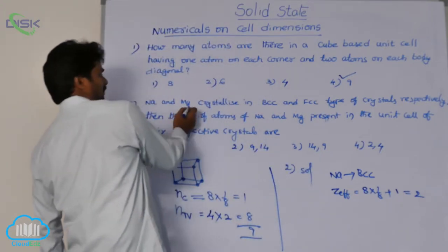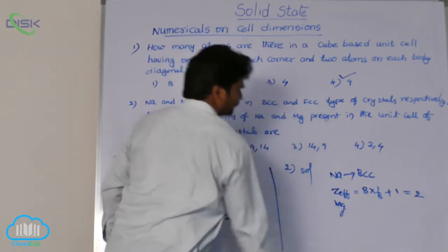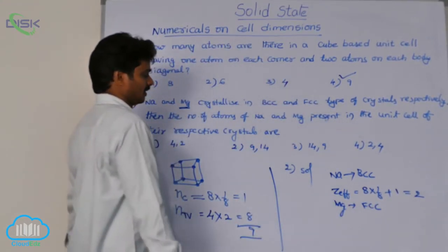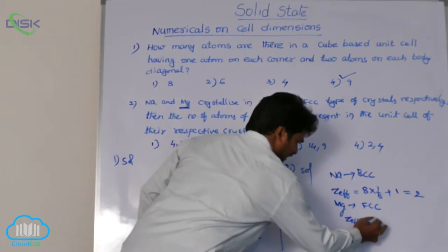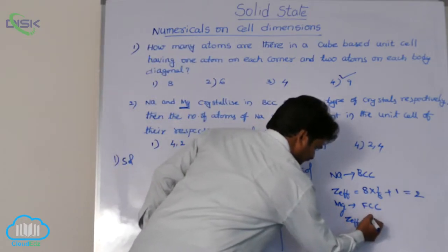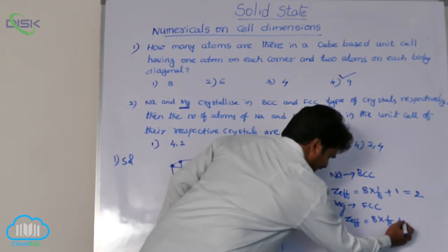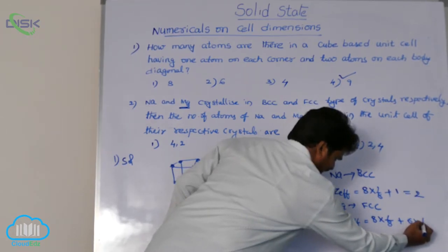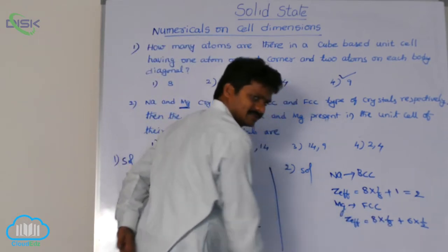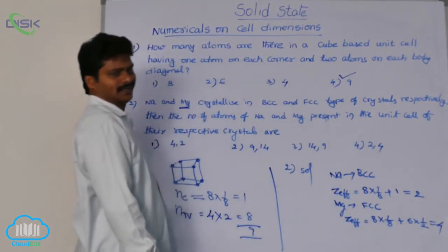Similarly, magnesium crystallizes in FCC lattice. In FCC, atoms are at 8 corners — 8 atoms, but each corner atom contributes 1/8 — plus at 6 face centers, 6 atoms, but each face-center atom contributes only 1/2. So: 8 × 1/8 = 1, plus 6 × 1/2 = 3. Total effective atoms in FCC: 4.